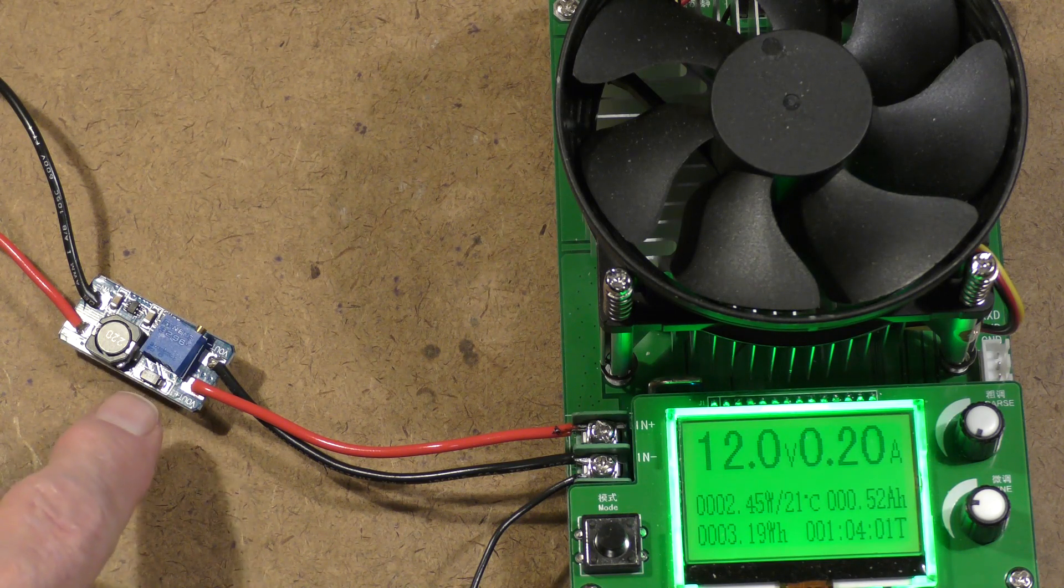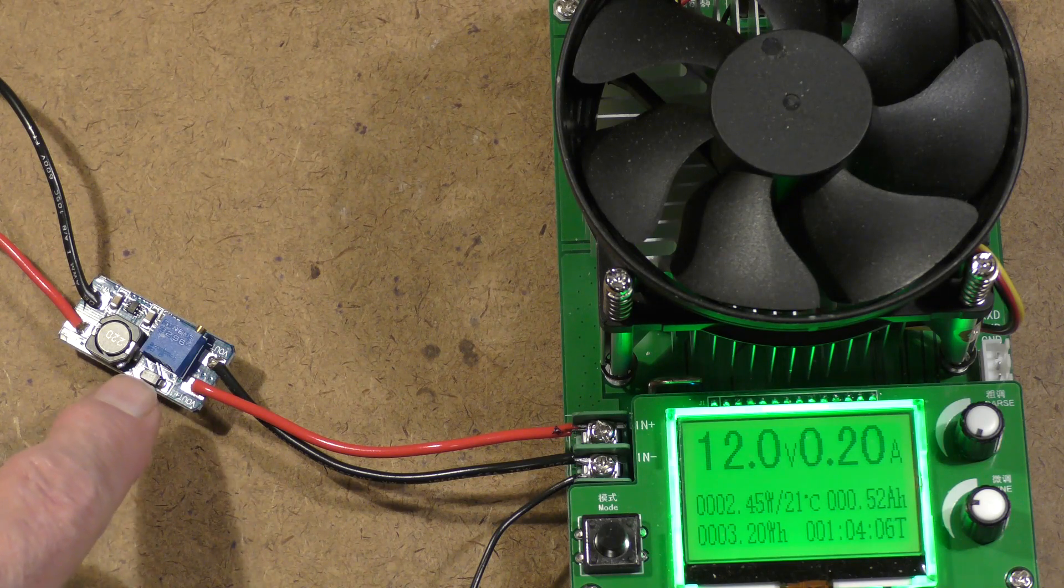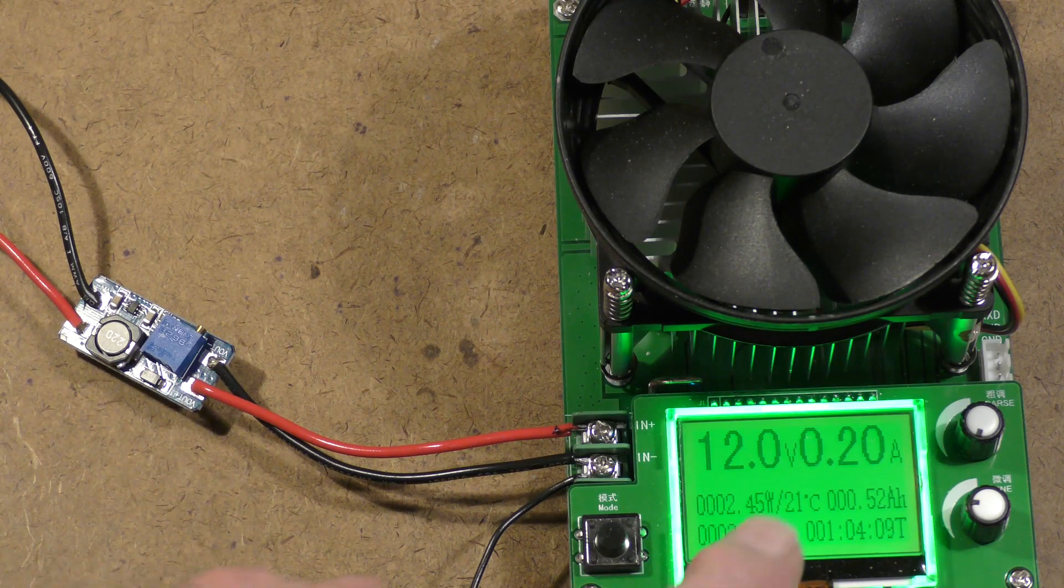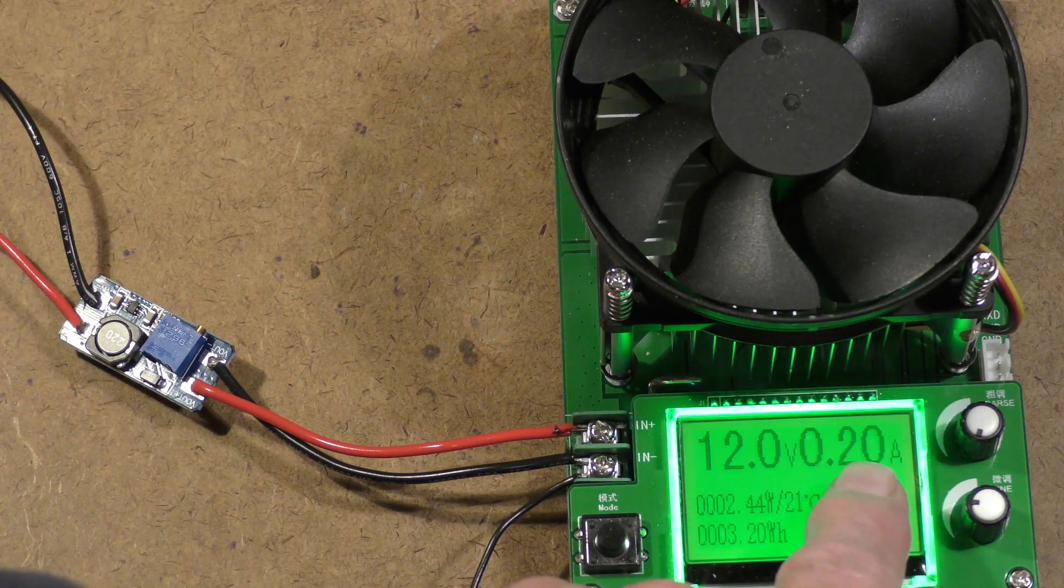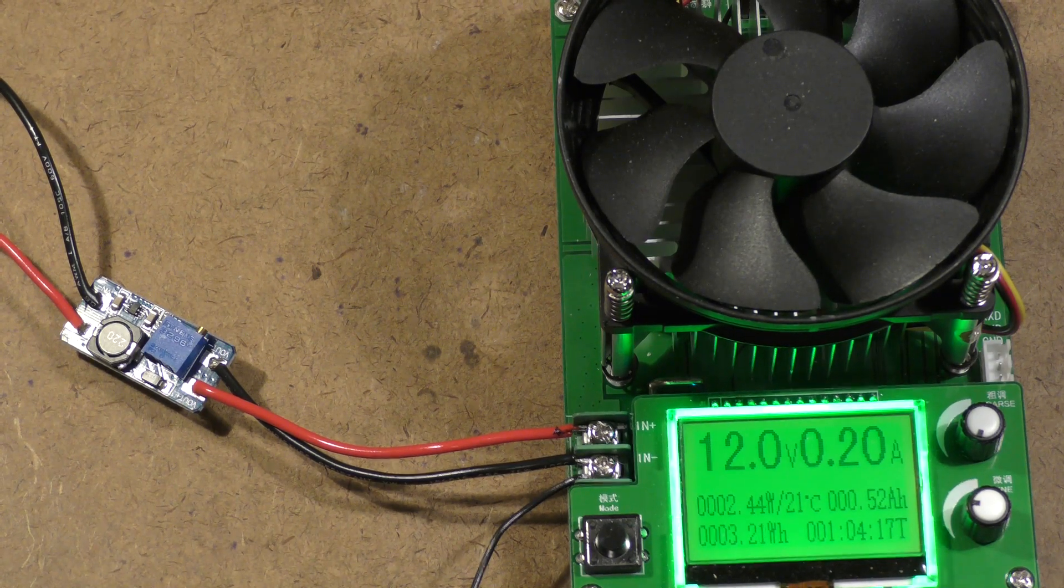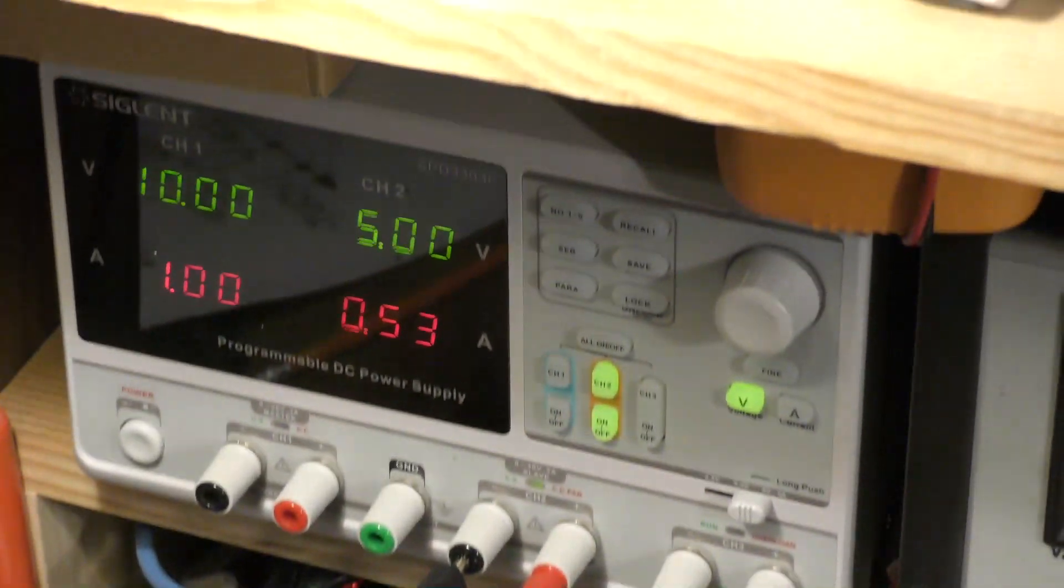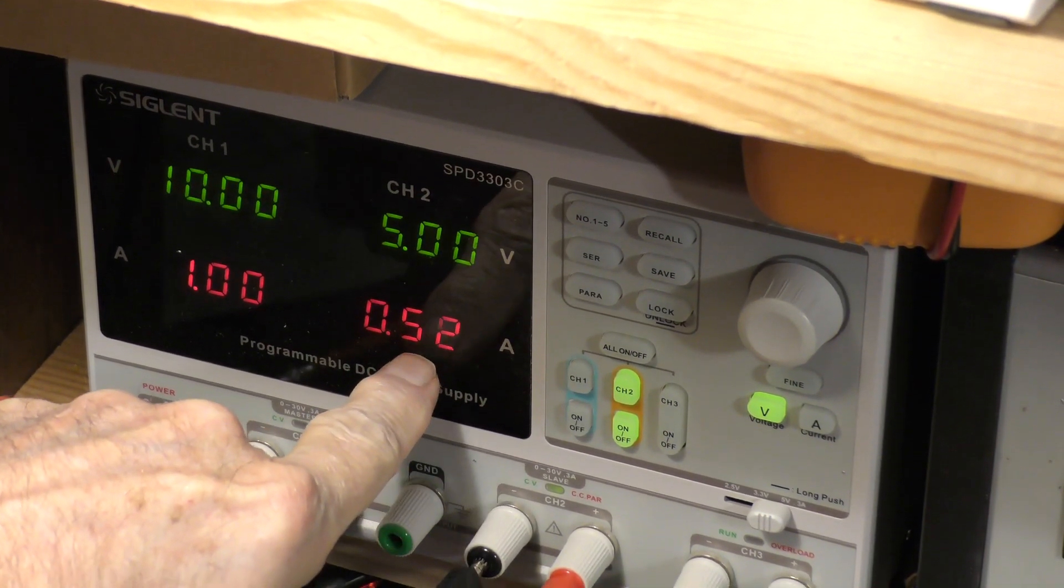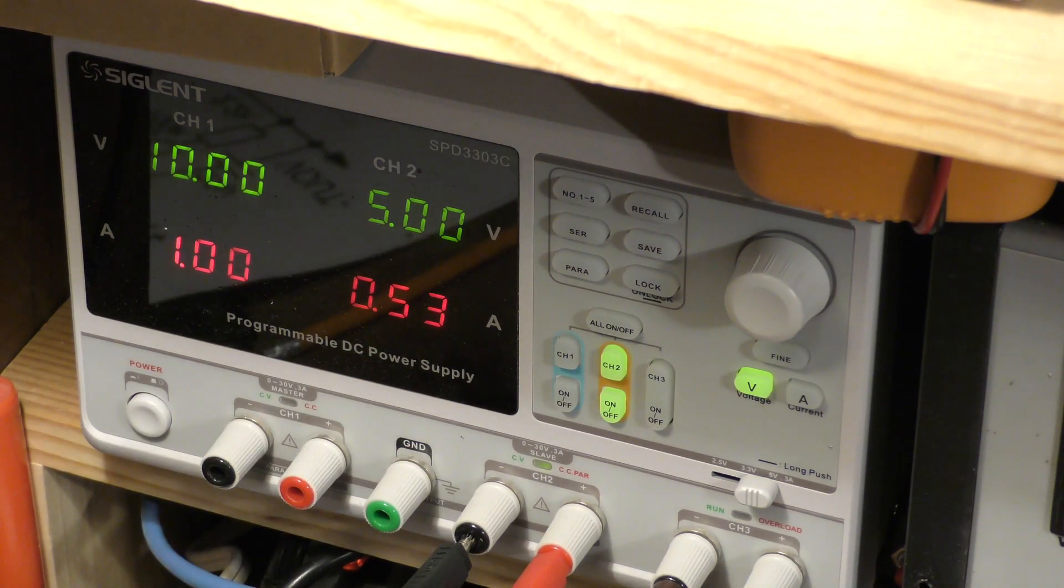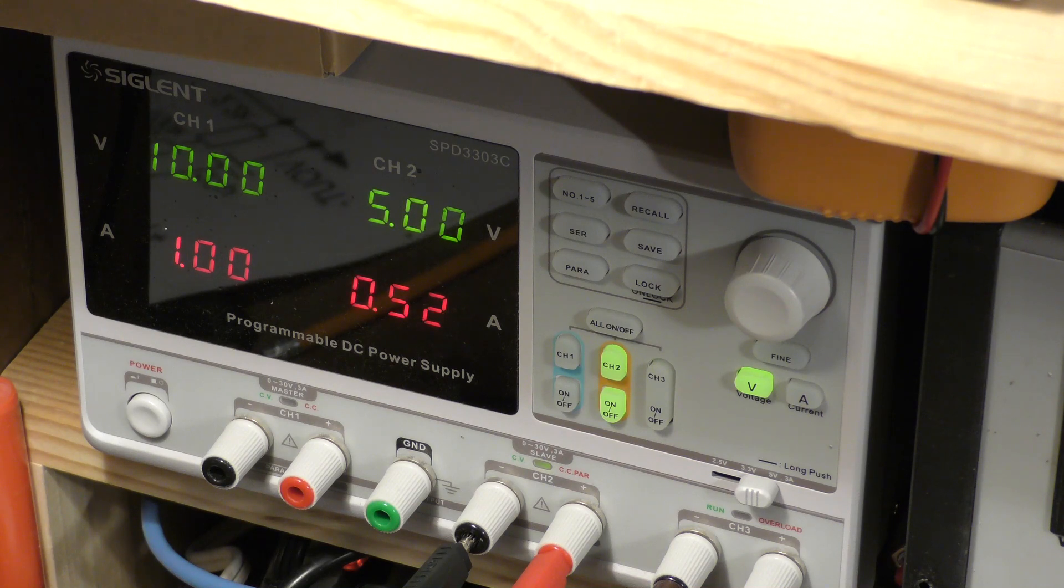We've talked about that a few times and we've actually looked at a buck converter, but we haven't looked at an actual boost converter so far. You'll notice that it is putting out 12 volts at 200 milliamperes. The supply is over there: 5 volts at 0.525354, it varies.